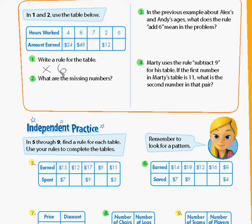Question number two: What are the missing numbers? So if the rule is times six, for seven hours that's seven times six, which is $42. And six times six is $36.